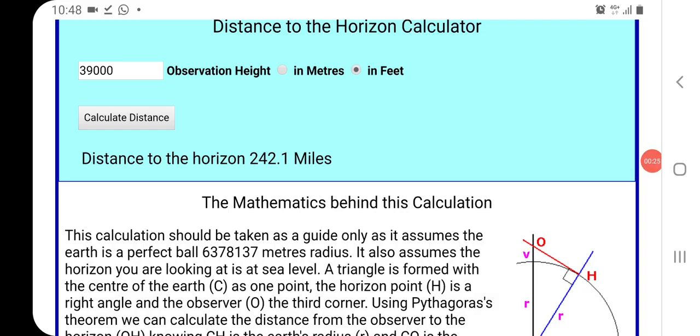Okay, so I want to know if I'm in an airplane cruising at 39,000 feet, I want to know how far away the horizon is that I see out the window at eye level. I want to know how far that horizon is according to the globe mathematics, how far away that is supposedly from me.